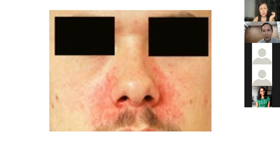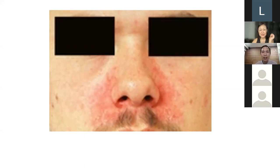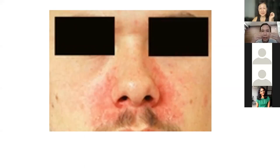The second type of rosacea is papulopustular, which looks like acne and is commonly misdiagnosed as acne. Third is rhinophyma, where sebaceous hyperplasia makes the nose look very large. The fourth feature is ocular rosacea — gritty eyes, often misdiagnosed as allergic conjunctivitis. This case is not rosacea, and it's not a butterfly rash either, as the cheeks are not affected.